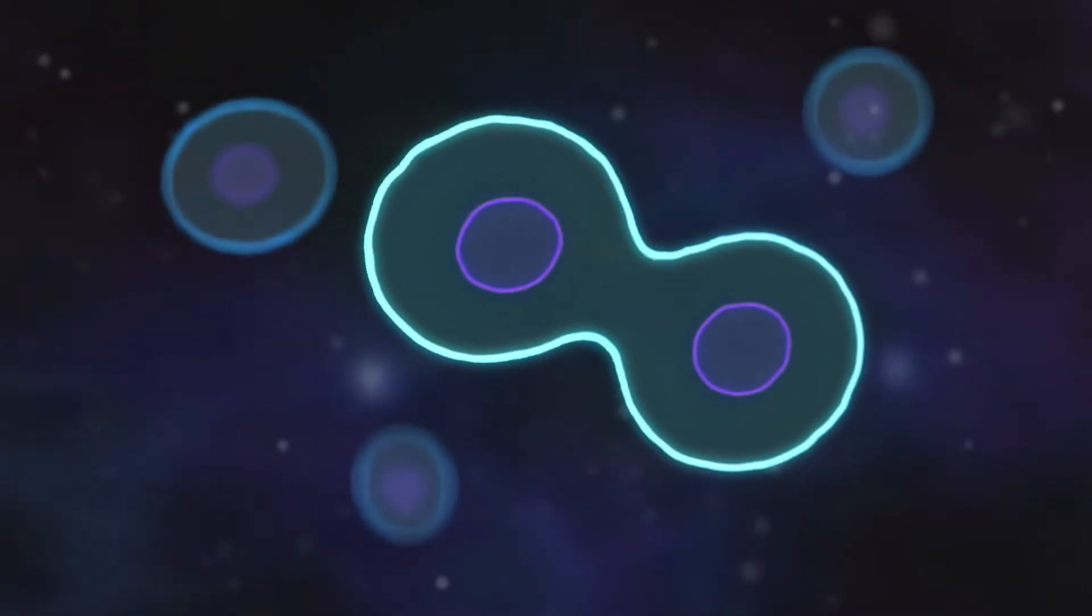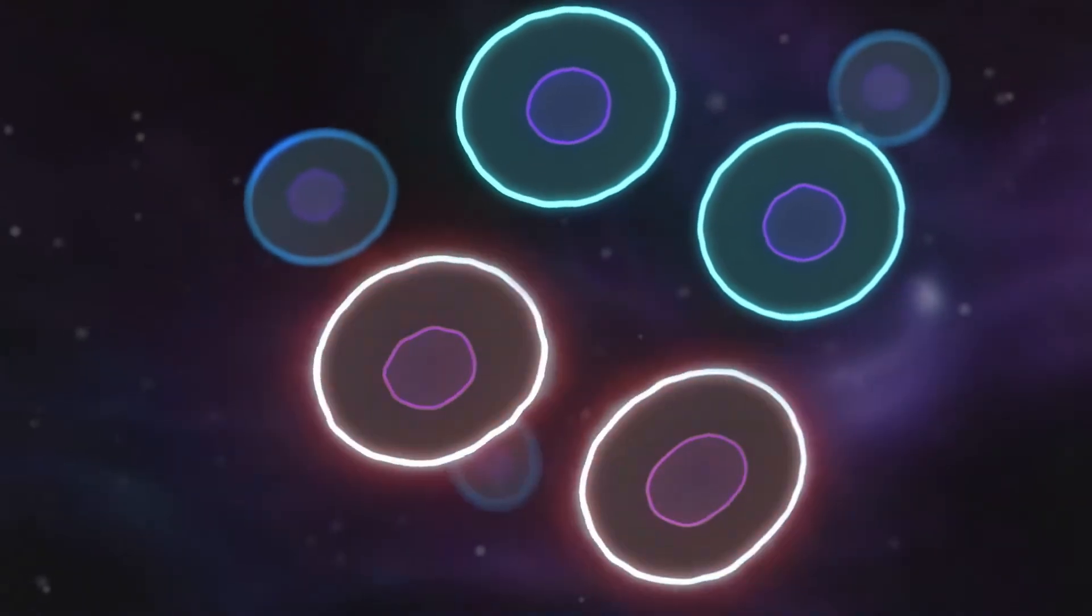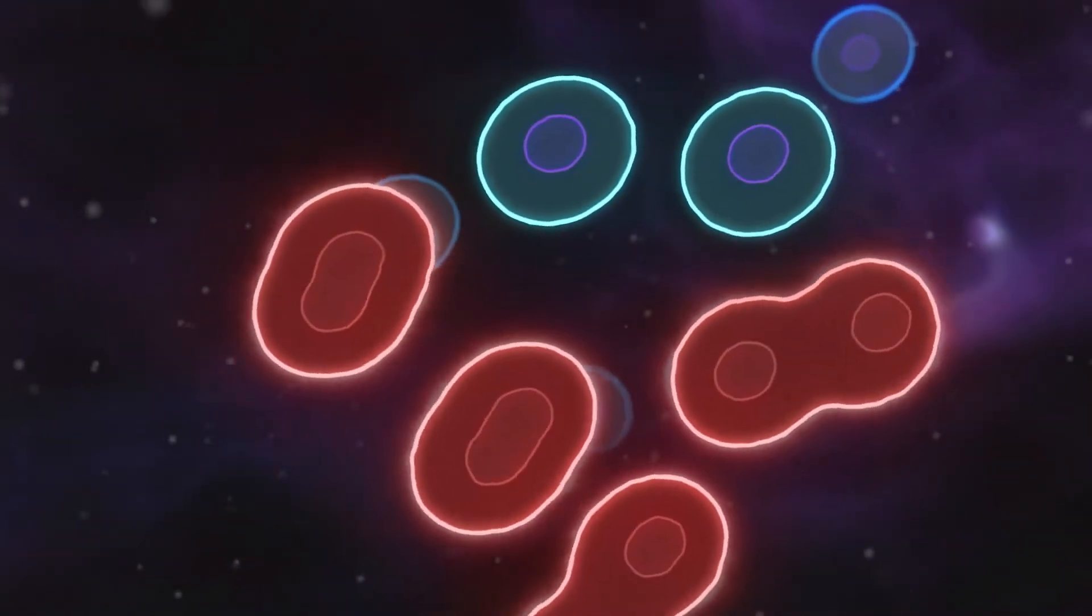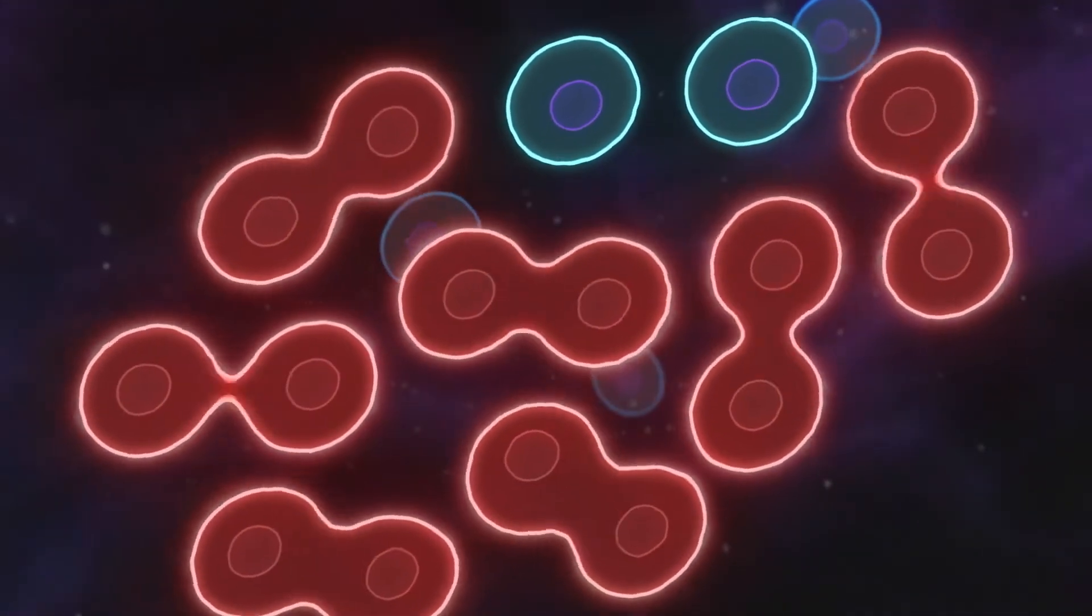Most human cells have a built-in lifespan of around 40 to 60 divisions, but not all cells. Cancer cells grow relentlessly and have ways to get around this limit.